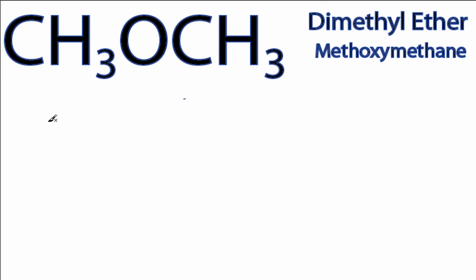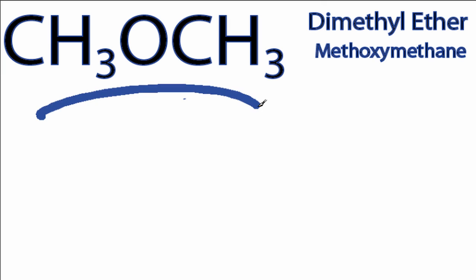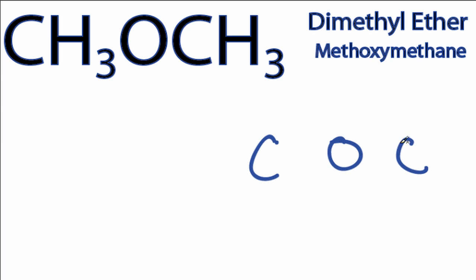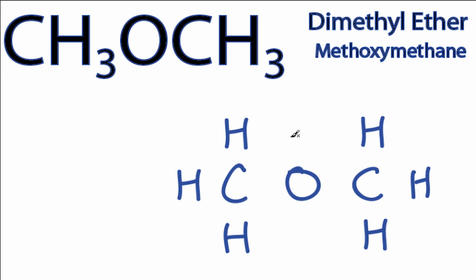This is the CH3OCH3 Lewis structure, dimethyl ether. The way this is written really kind of tells us how we're going to draw the Lewis structure. We'll put a carbon, then oxygen, and another carbon, and then our hydrogens — they'll go around the outside, like so.